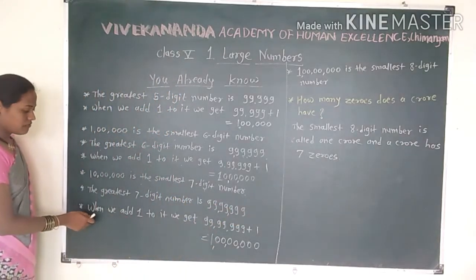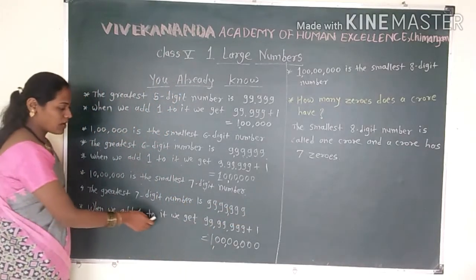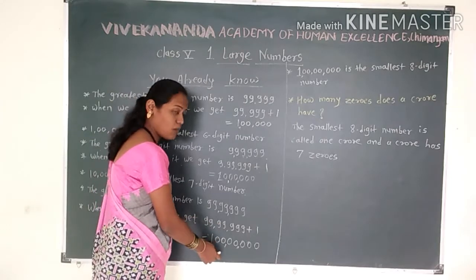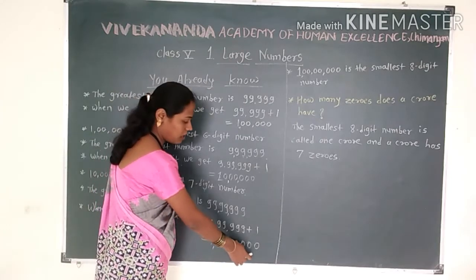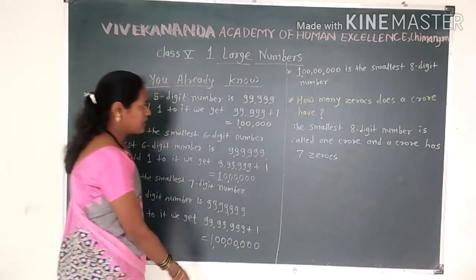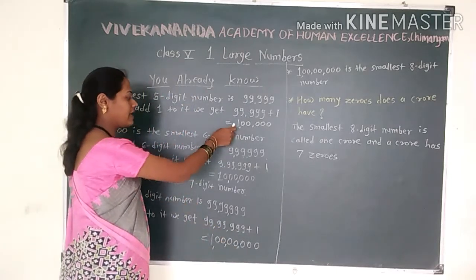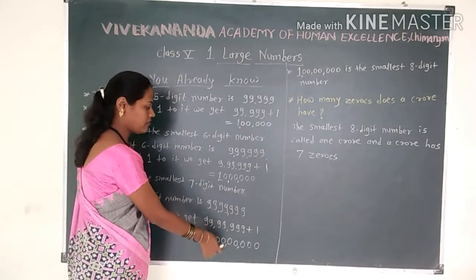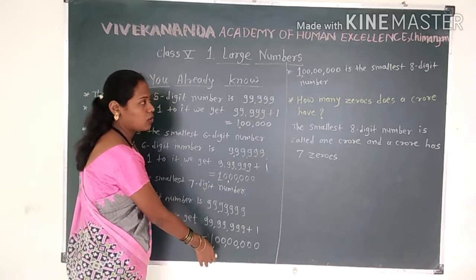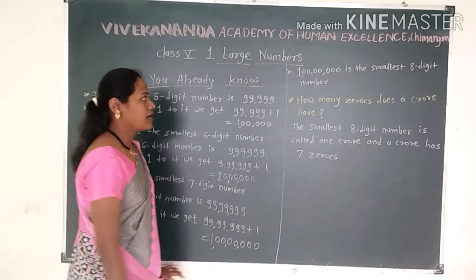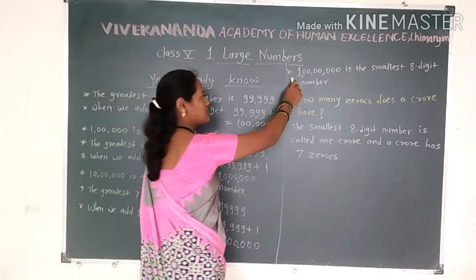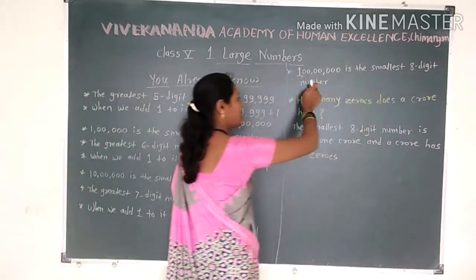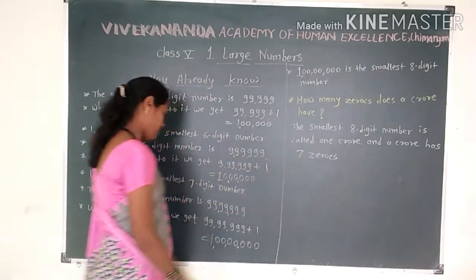Now, when we add 1 to the greatest 7-digit number, we get 1 crore. The progression goes: 1 lakh, then 10 lakh, then 1 crore. 1 crore is the smallest 8-digit number.